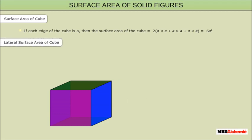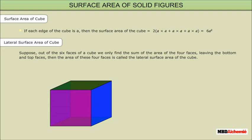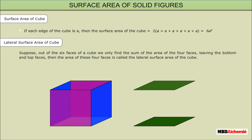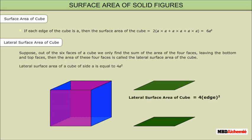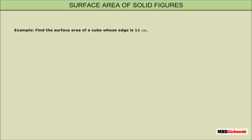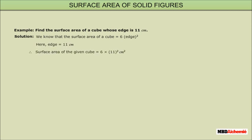Lateral surface area of a cube: out of the 6 faces of a cube, if we only find the sum of the area of the 4 faces leaving the bottom and top faces, then the area of these 4 faces is called the lateral surface area of the cube. The lateral surface area of a cube of side A is equal to 4A². Now, let us find the surface area of a cube whose edge is 11 cm. Solution: the surface area of a cube is 6 × edge². Here, edge = 11 cm. Therefore, the surface area of the given cube is 726 cm².